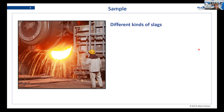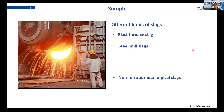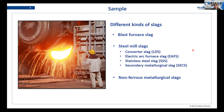There are different kinds of slags. There is blast furnace slag, different steel mill slags, and non-ferrous metallurgical slags. There are also some more slags belonging to the steel mill slags sector: converter slags, electric arc furnace slags, stainless steel slags, and secondary metallurgical slags. So there's quite a broad range of samples in this whole sector. We also have filter dusts, which come from gas cleaning.